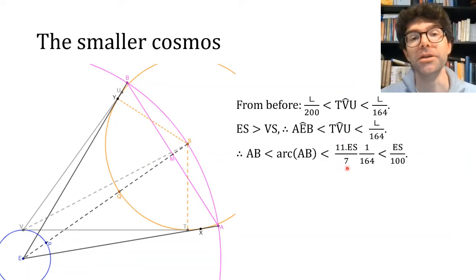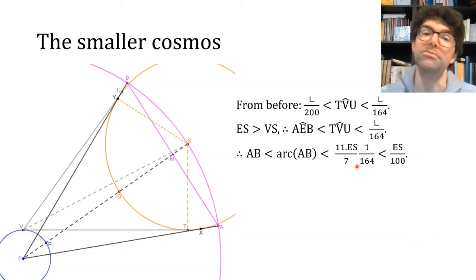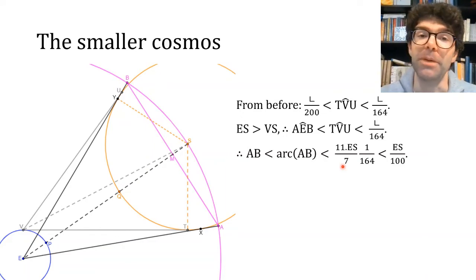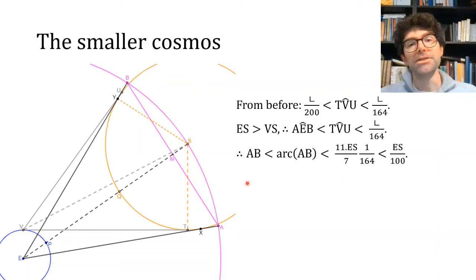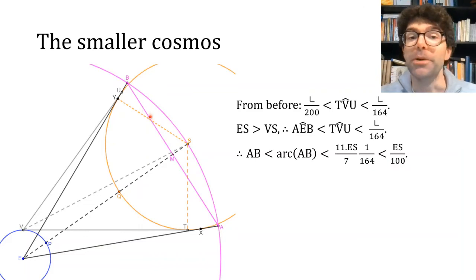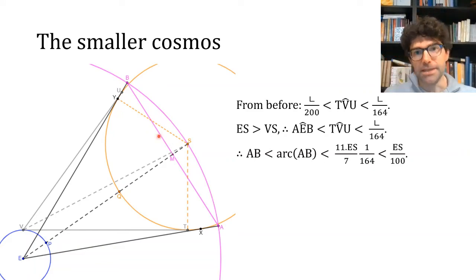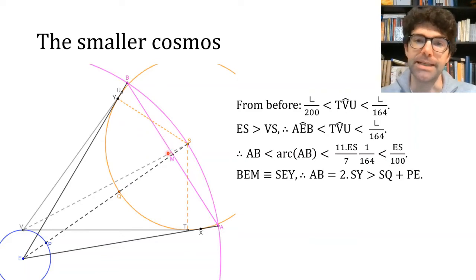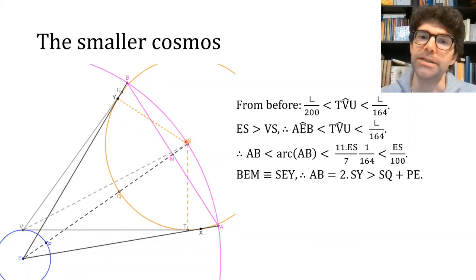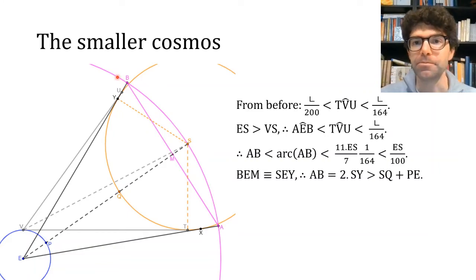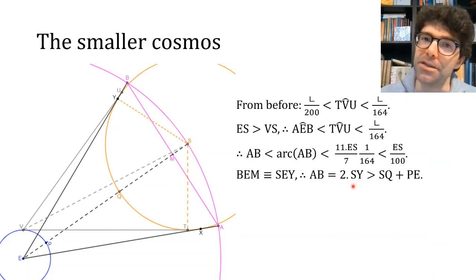We can use Archimedes' knowledge that the ratio of the quarter circle to the radius — what we would call π/2 — is a little below 11/7. There's also a cute fact: AB is actually the same as the diameter of the sun. The key point is that triangles BEM and SEY are congruent — both right-angled, sharing an angle at E and a hypotenuse. So AB, or twice the length BM, equals twice the length SY, which is the diameter of the sun.